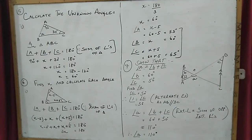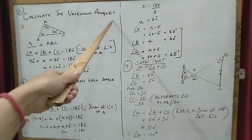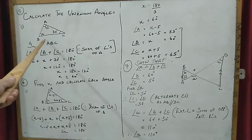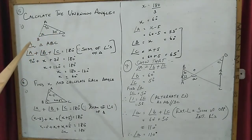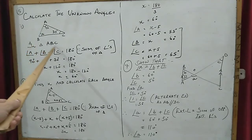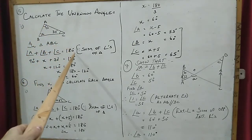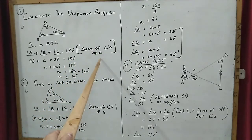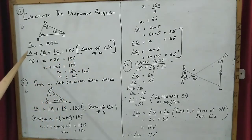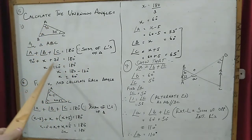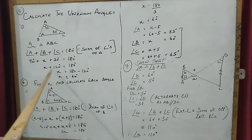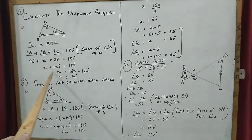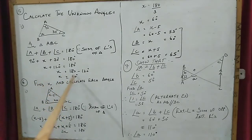Open your books to page 180. We will do the fifth part: calculate the unknown angles. In triangle ABC, 90 degrees and 30 degrees are given, and x is unknown. Angle A plus angle B plus angle C equals 180 degrees. So 90 plus x plus 30 equals 180. Adding the numbers, 120 goes to the other side as minus, so x equals 60 degrees.